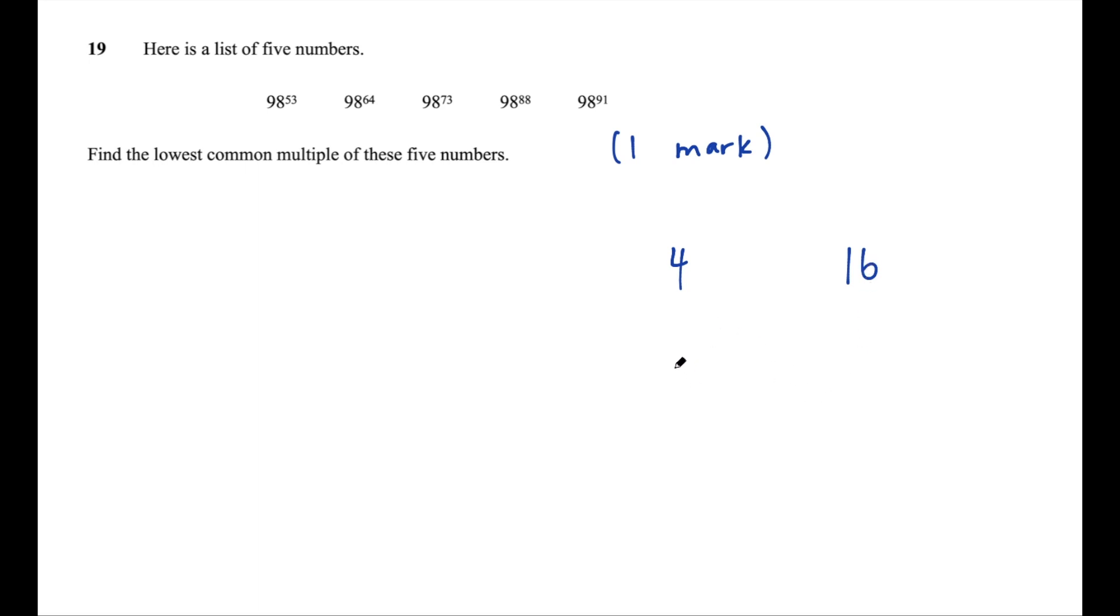What if I wrote it like this? What's the lowest common multiple of 2 squared and 2 to the power of 4? 2 to the power of 4 is also 16. And in this case, the lowest common multiple, well, I just answered, right? Is 16. But we could also think of it as 2 to the power of 4.